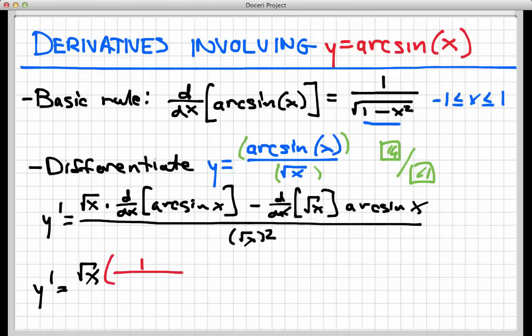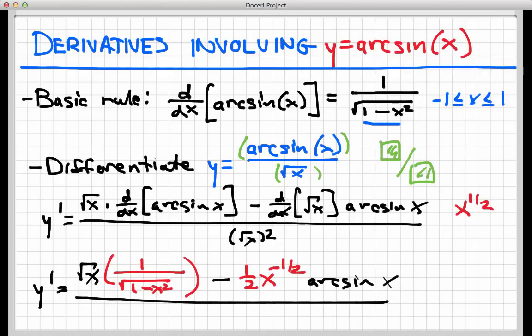And now I'm going to use my basic formula here for the derivative of arc sine. And that's 1 divided by radical 1 minus x squared. And then I have a minus, the derivative of square root of x. Square root of x is the same thing as x to the 1 half. And so its derivative is 1 half x to the minus 1 half. And this is all times arc sine of x. And then on the bottom I have the square root of x squared, and that just comes out to x. So some simplification can take place here, but I don't want to obscure the calculus that's taking place.